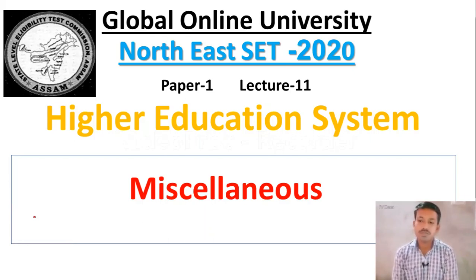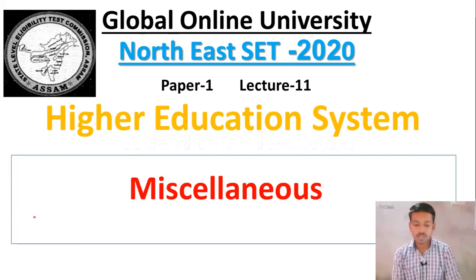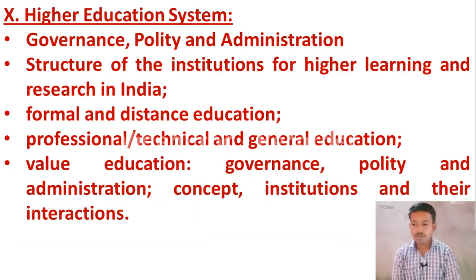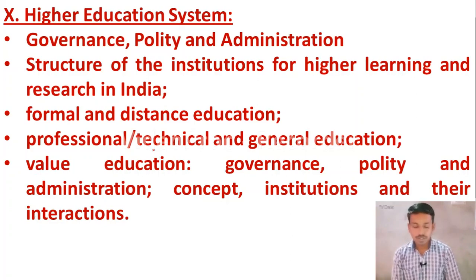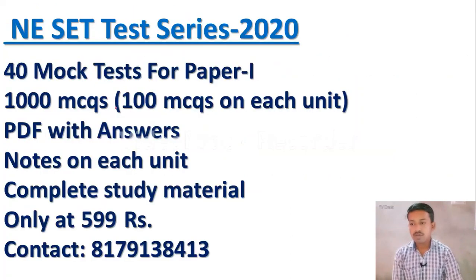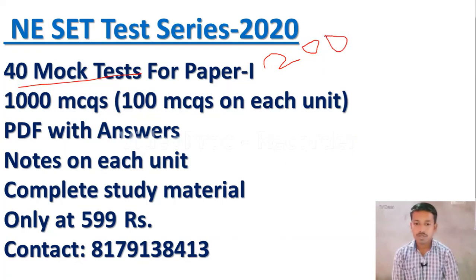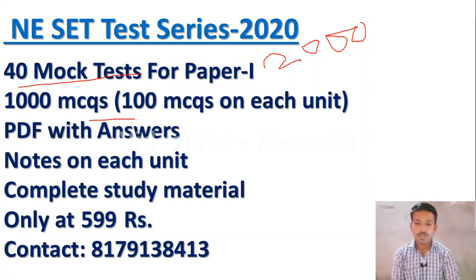In this video we are going to discuss some important MCQs on higher education system for your upcoming North East SET. This is the syllabus for North East SET. We have covered all the topics from higher education system. We are providing you 40 mock tests for Paper 1 where you will be prepared for 2000 MCQs. We are also providing you 1000 MCQs. Each unit carries 100 MCQs. Totally you will be prepared for 3000 MCQs here. This is enough preparation for your Paper 1.